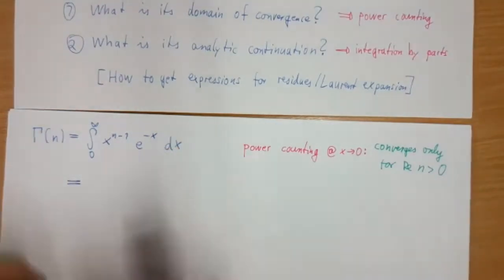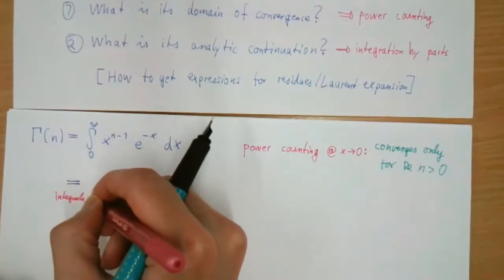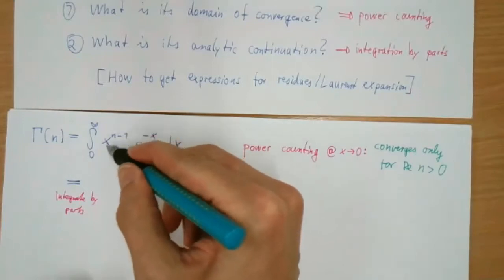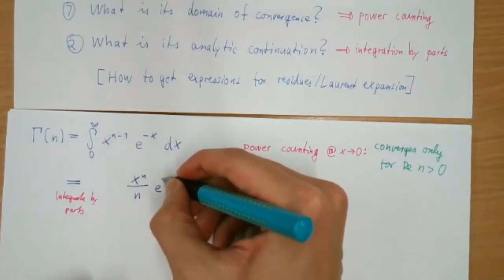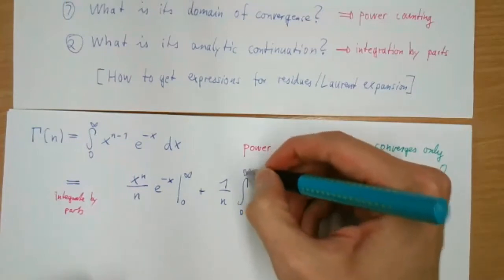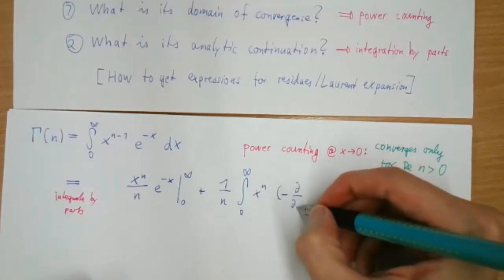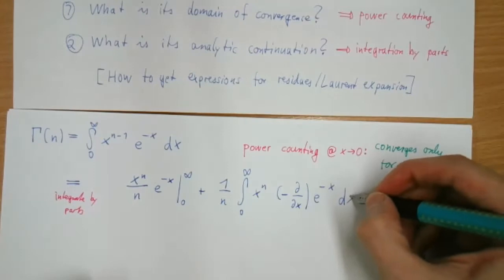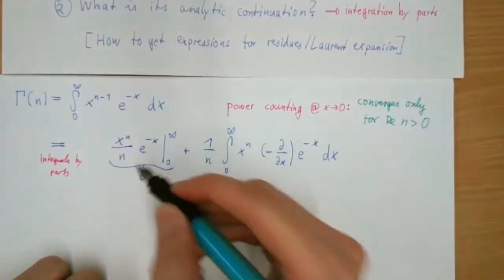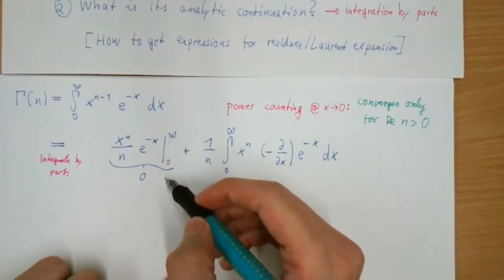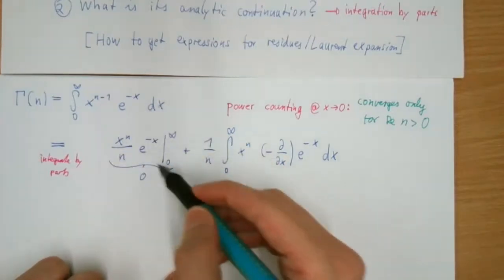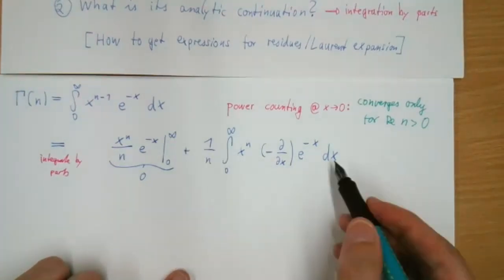What we have to do is integration by parts. I'm integrating x to the n minus one, so that integrates to x to the n over n, and then I have the e to the minus x. The boundary terms vanish: for large x the exponential suppresses it, and for small x, if the real part of n is positive, it leads to zero. So we get this identity — a different integral representation of the same function.